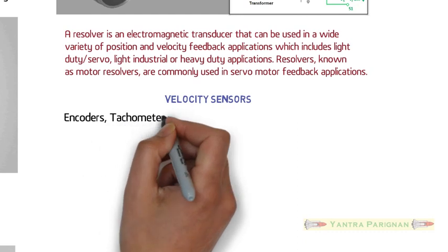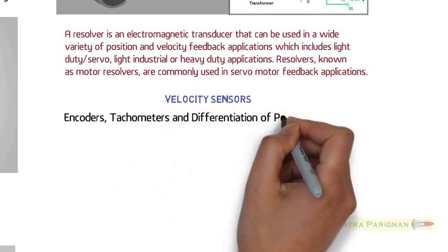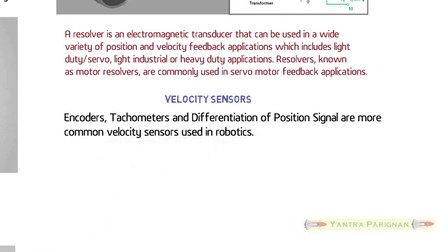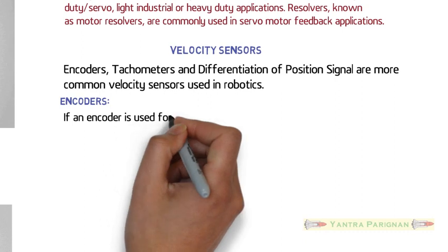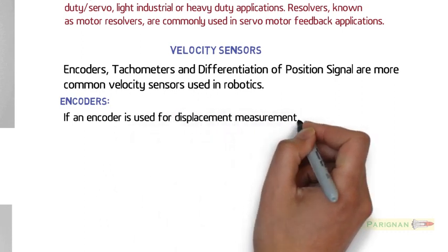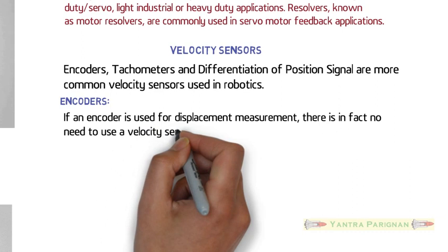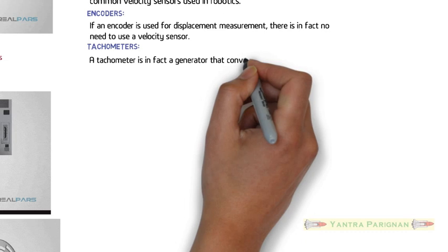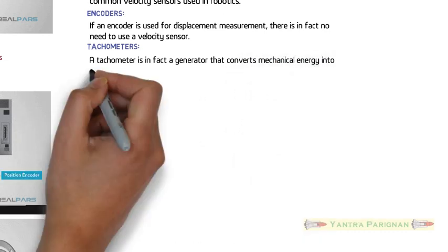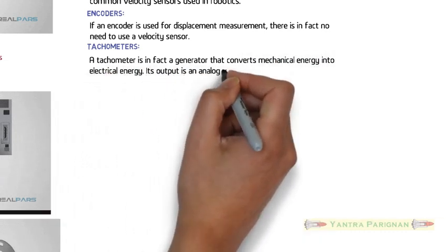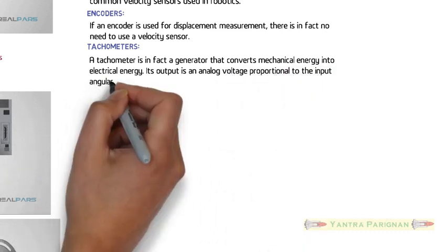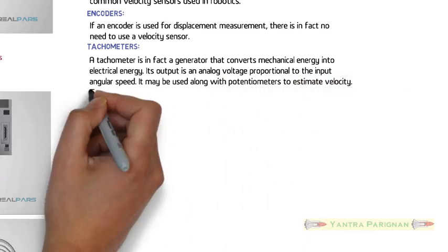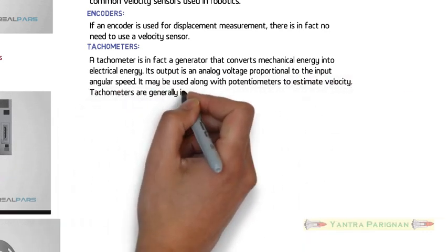Velocity sensors. Encoders, tachometers and differentiation of position signal are the common velocity sensors used in robotics. Encoders. If an encoder is used for displacement measurement, there is in fact no need to use a velocity sensor. Tachometer. A tachometer is in fact a generator that converts mechanical energy into electrical energy. Its output is an analog voltage proportional to the input angular speed. It may be used along with potentiometers to estimate velocity. Tachometers are generally inaccurate at very low speeds.